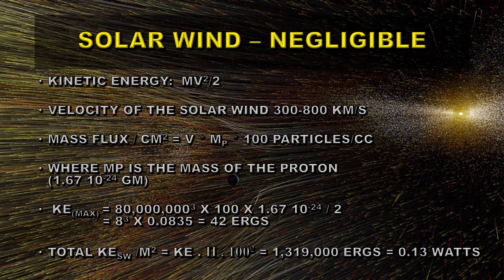But the solar wind is continuous. But when we look at the numbers, it also is negligible. You can calculate the kinetic energy of the solar wind, which is a half mv squared. And it turns out to be something like 0.013 watts per square meter. And that's a tiny fraction of the total solar irradiance. So again, it's a negligible input.